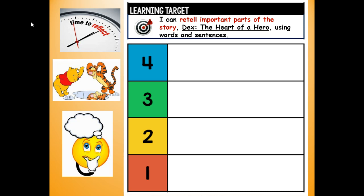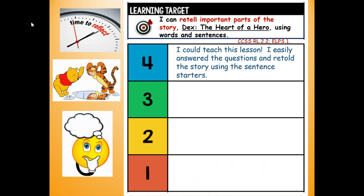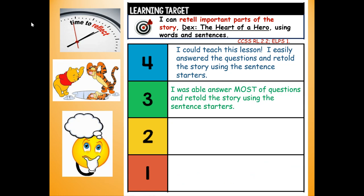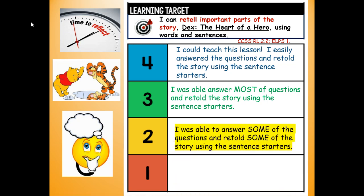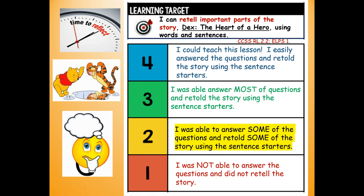I can retell the important parts of the story, Dex: The Heart of a Hero, using words and sentences. How do you think you did retelling the story and answering the questions? Would you give yourself a four — I could teach this lesson, easily answered questions and retold the story using sentence starters? A three — able to answer most questions? A two — able to answer some questions? Or a one — not able to answer the questions? Thank you for retelling the story with me and talking about the important events. I had a great time, I hope you did too. Have a great day!